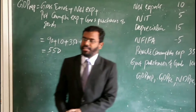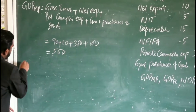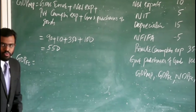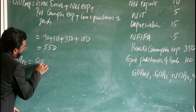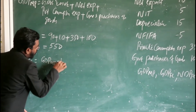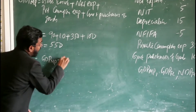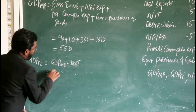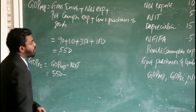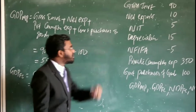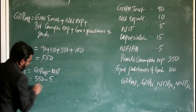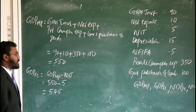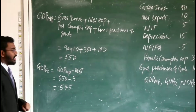Next, calculate GDPFC. GDPFC is equal to GDPMP minus NIT. So GDPMP is 550 minus NIT, which is 5, that is equal to 545. So that is our GDPFC.